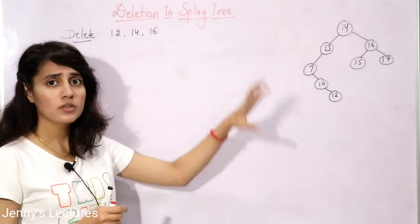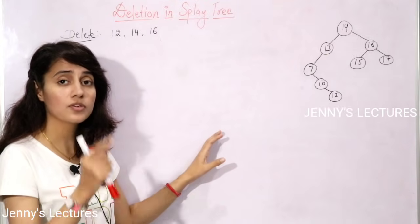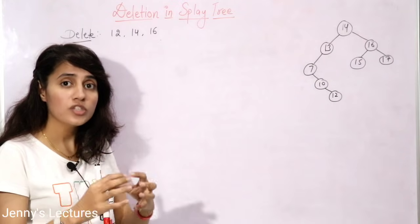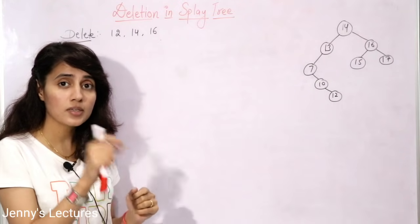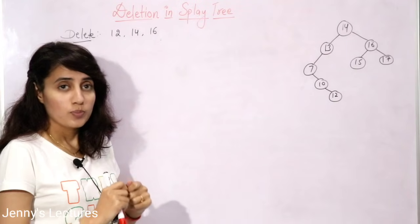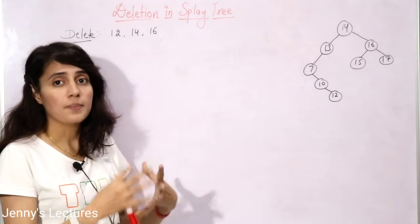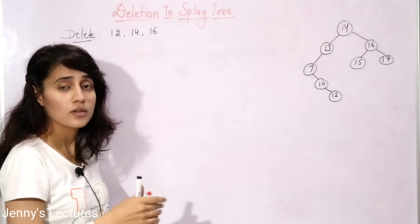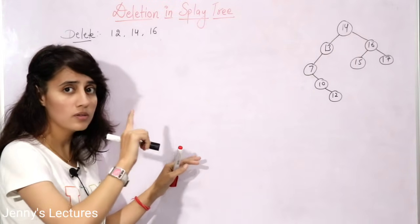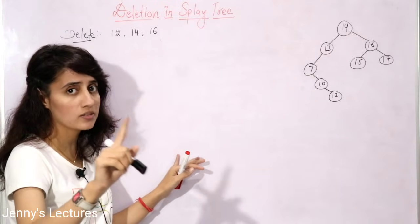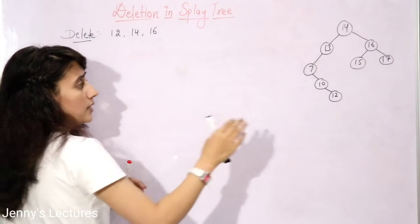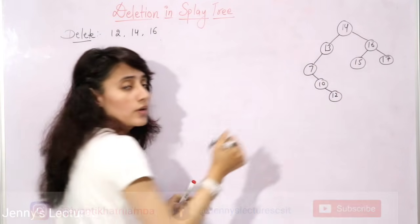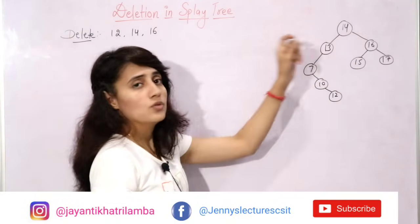First you delete the data using the standard BST deletion step, and after that you do splaying on this tree. The important point to note is: on which element do you splay? To delete 12, the first step is to perform standard BST deletion. We search for 12, starting from the root.